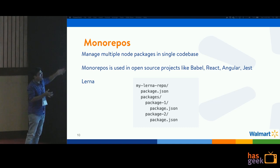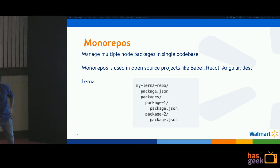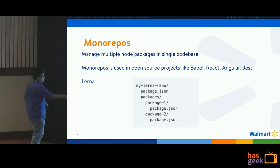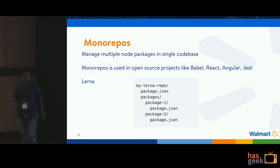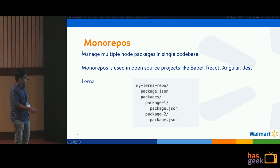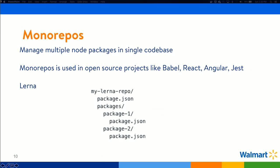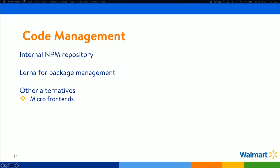Lerna allows you to manage multiple packages in a single codebase. As you can see on the screen, we have the main Lerna repo folder, and inside it a packages folder. This packages folder consists of the npm packages for your application, and each of these packages is added as a dependency to the main one. You are developing these packages inside a single codebase. You can also add dependencies locally, test them, and then publish to your npm repository. We used an internal npm repository, not the public one.